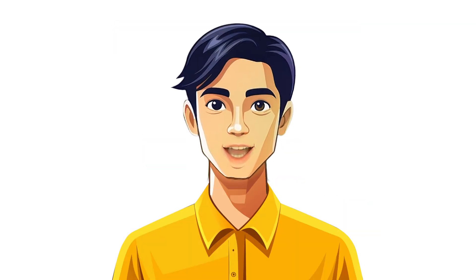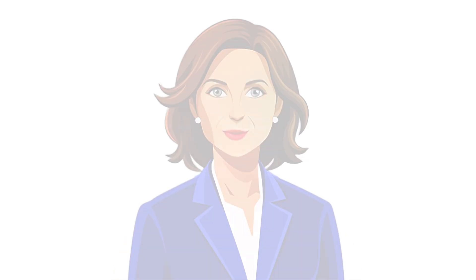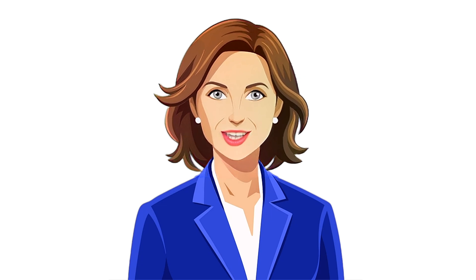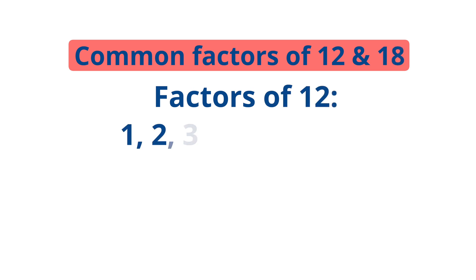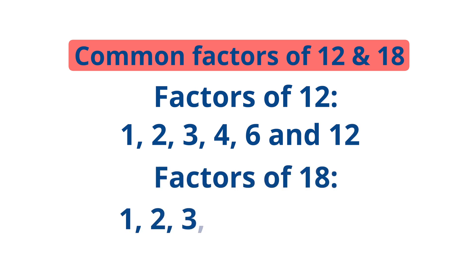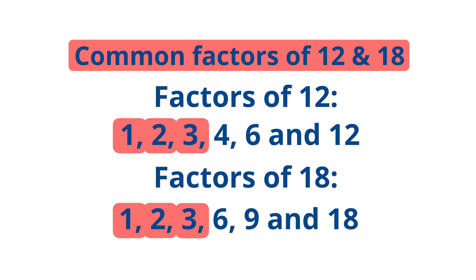What about common factors? How do we find those? Common factors are the factors that two or more numbers have in common. To find them, list the factors of each number and identify the common ones. For example, factors of 12 are 1, 2, 3, 4, 6, and 12. Factors of 18 are 1, 2, 3, 6, 9, and 18. So the common factors of 12 and 18 are 1, 2, 3, and 6.